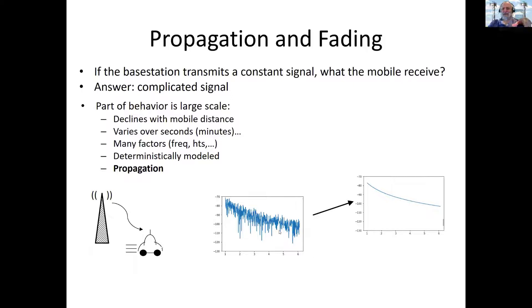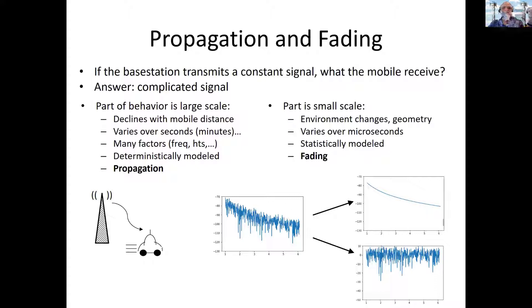Now, of course, there's much more going on here. There's the small-scale behavior, and this is stuff that's happening over the order of microseconds, and it's because of the change in geometry. You've moved a couple of feet this way or a couple of feet that way. And it varies over microseconds in an outdoor environment. If you're in an indoor environment, it can vary over nanoseconds or tens or hundreds of nanoseconds. In general, this is statistically modeled. We refer to this as fading, multi-path fading sometimes. And I'm not going to be talking about that right now. Right now, we'd like to talk about propagation.